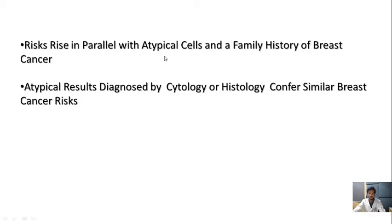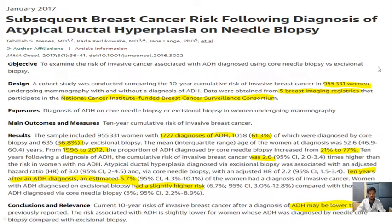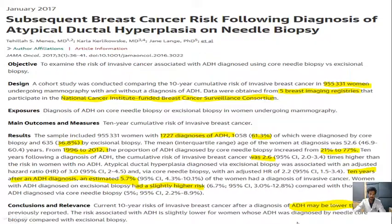The risk rises in parallel with atypical cells and a family history of breast cancer. Atypical risk diagnosed by cytology or histology can confirm similar breast cancer risk. A study published in 2017 by Tehila et al. suggested that women with atypical hyperplasia diagnosed on excisional biopsy had a slightly higher risk of developing invasive carcinoma compared to those in which it was diagnosed via core biopsy. They concluded that the risk associated with ADH may be lower than previously reported, and is slightly lower for women diagnosed by needle core biopsy.